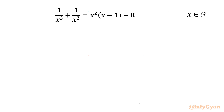Welcome back to Infigyan friends. In this video we have one very interesting question from algebra. The equation is 1 over x cubed plus 1 over x squared equal to x squared times x minus 1 minus 8, where x belongs to real numbers.